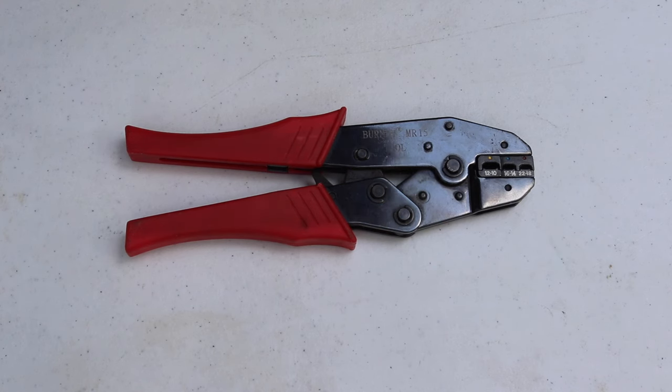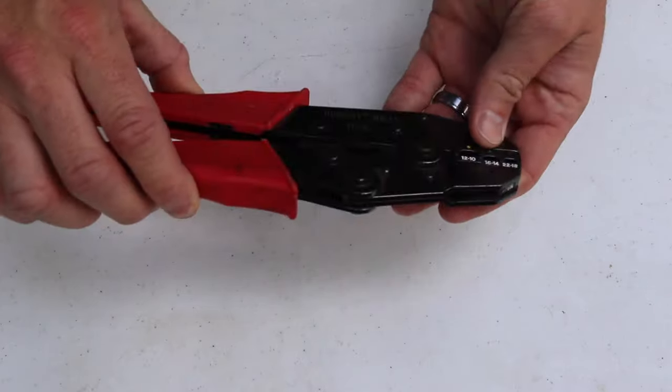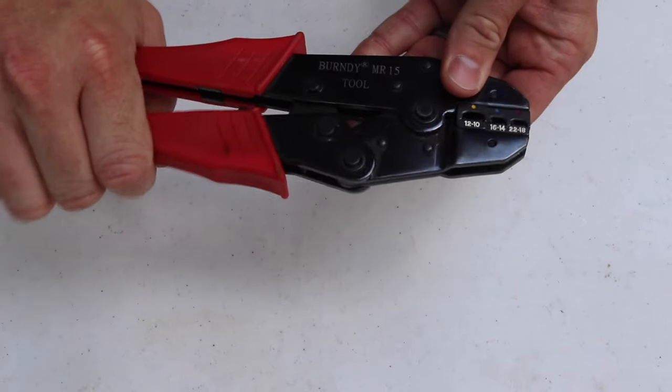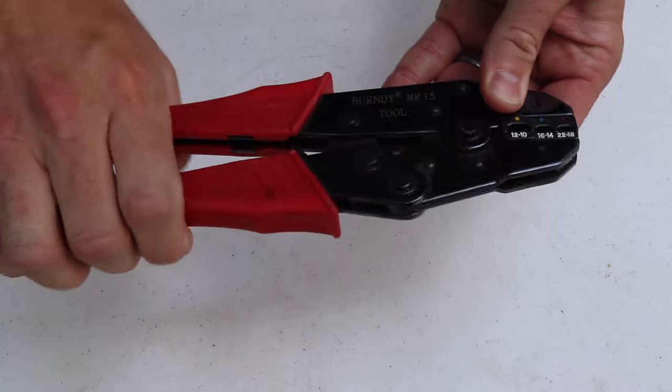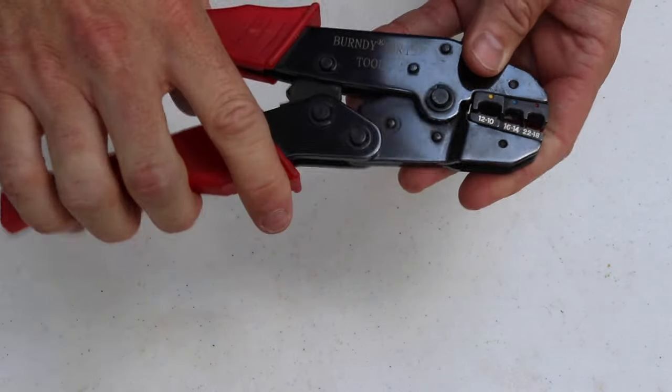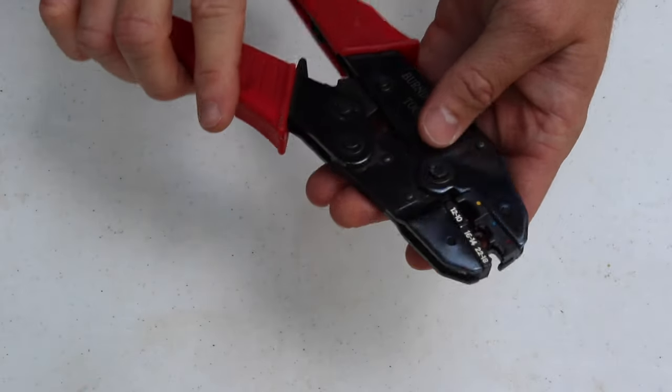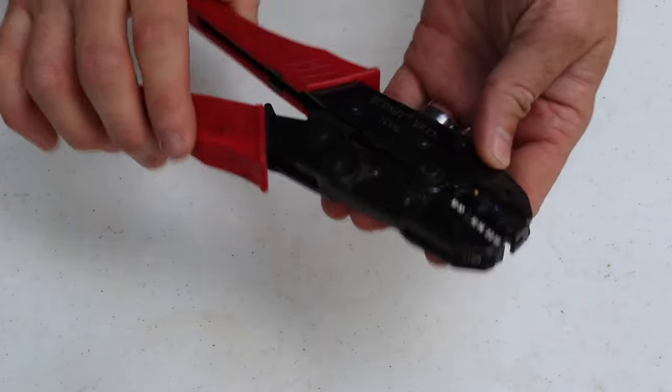The next thing you're going to need is a decent set of crimpers. I really like the ratcheting crimpers because it guarantees that you get a complete crimp - it won't actually let you release until it's fully depressed. You can pick these up for less than 30 bucks so if you're going to do a whole bunch of wiring it's definitely worth getting.